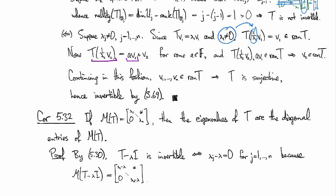Right. And so as you can see, that operator T minus lambda I will be invertible if and only if lambda_j is not equal to lambda for any j. So that tells you exactly what the eigenvalues are.